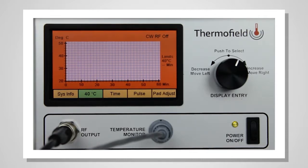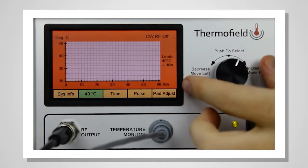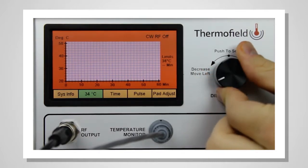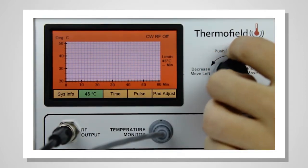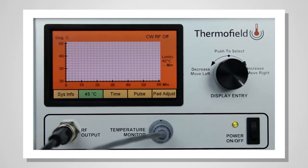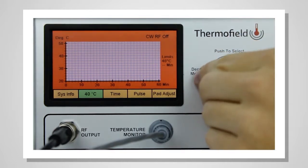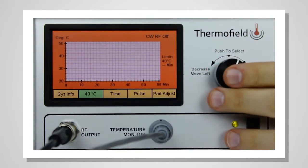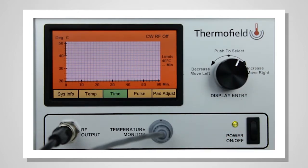To change the temperature value, push the selector knob again to select the temperature value and rotate the knob to select a new temperature. The value will be displayed on the right-hand edge of the screen in the limits field. When you've selected the right temperature, push the knob to confirm.